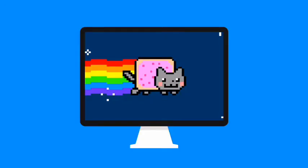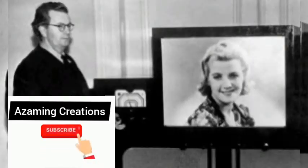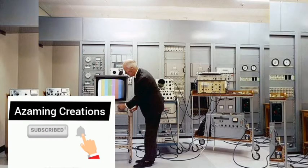Television broadcast began in Britain in 1936 and in the United States in 1939. At first, few people owned television sets, and the cameras, transmitters, and receivers could process images only in black and white. Since then, the popularity of television has grown enormously, especially since the introduction of color television in 1953.